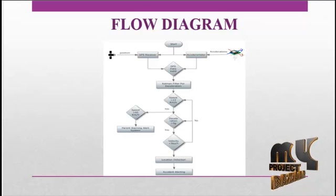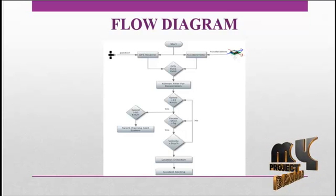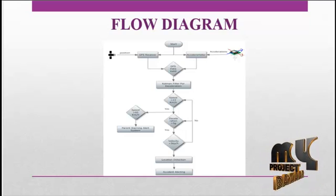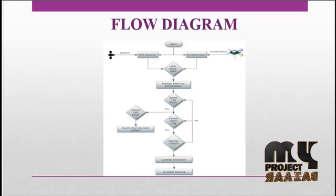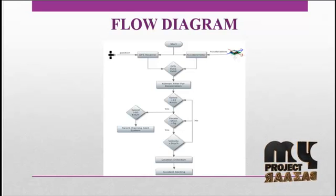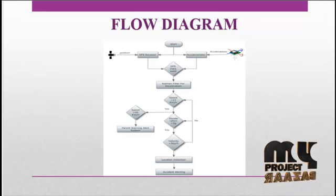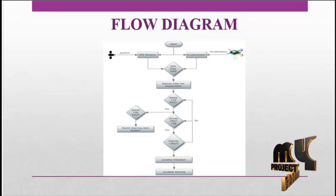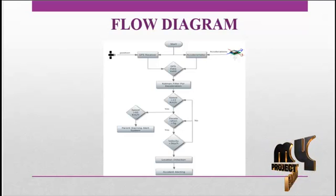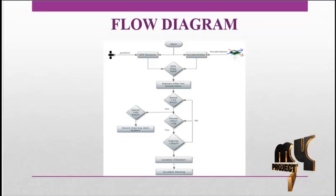If the GPS validation is successful, the Kalman filter for deceleration is checked, then the speed of the vehicle is checked. If the speed of the vehicle is 23 kmph or less, it will be detected as an accident.